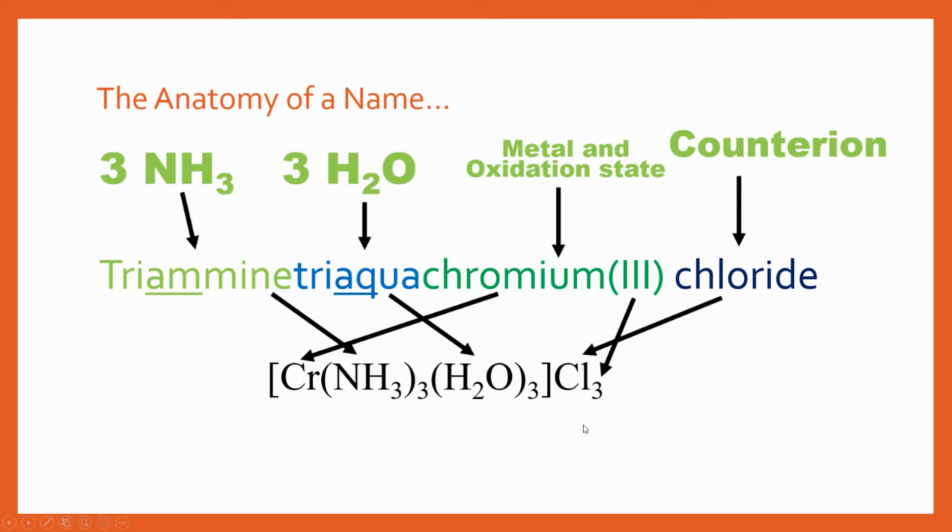Because we know that we've got chromium and we've got that three there we can figure out that it's got to be three chlorines in order to balance it out to be overall neutral in our coordination compound. So that is the anatomy of the name and by looking at this example and studying it it's going to help you understand the worked examples that I'm just about to go through.